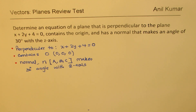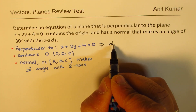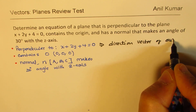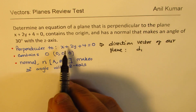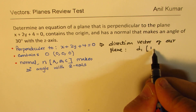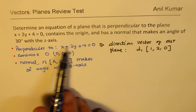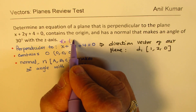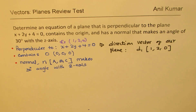From the first condition, which says it is perpendicular to this particular plane, that implies that the normal of that plane will be a direction vector of our plane. So we know one direction vector of our plane — let's call it d1. That normal becomes the direction, so d1 is 1, 2, and 0. The z component is missing. Being perpendicular means that this normal is parallel and has this direction vector lying in our plane.